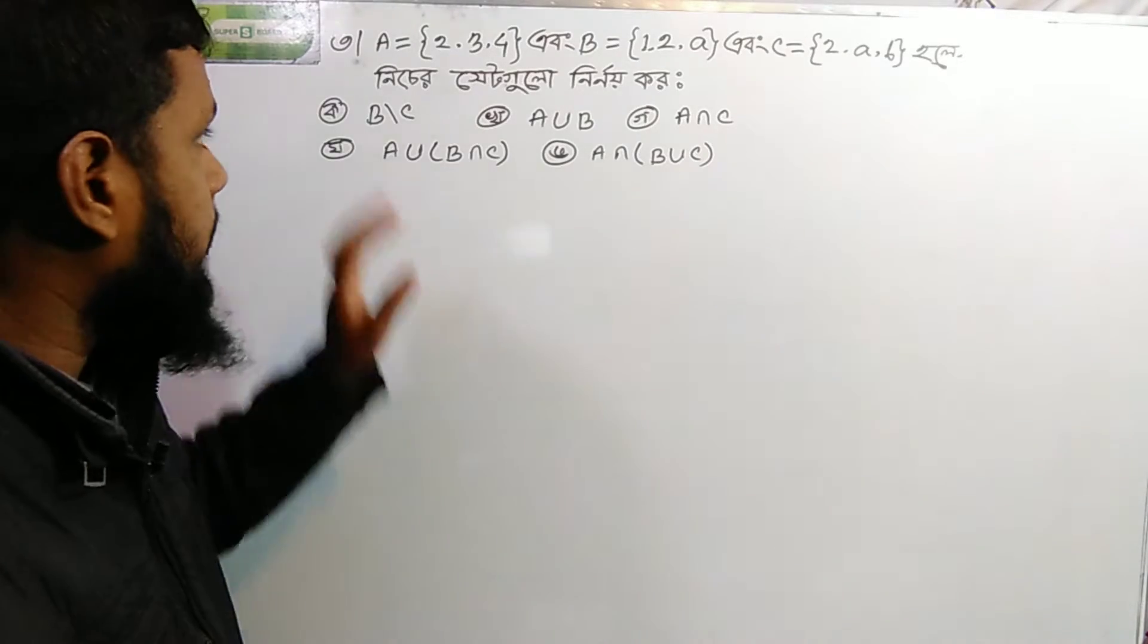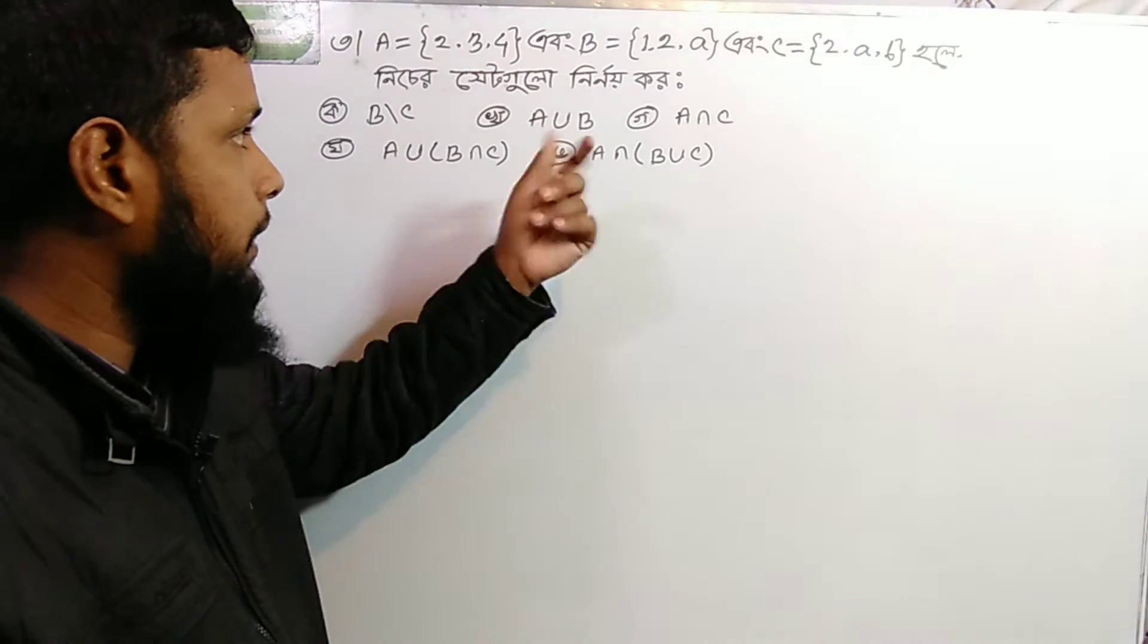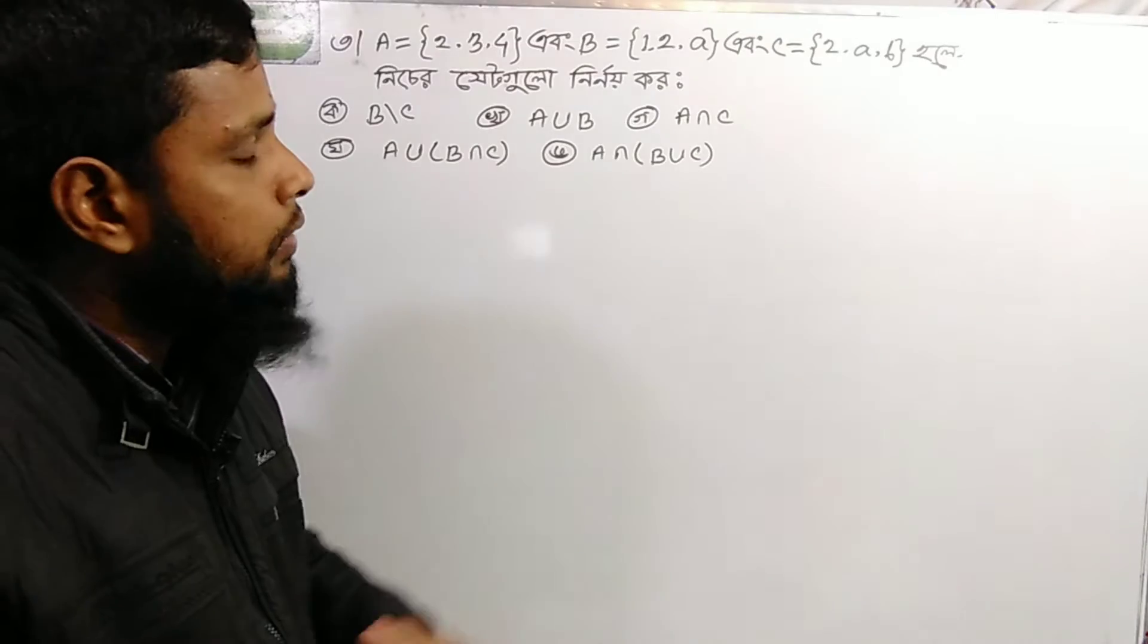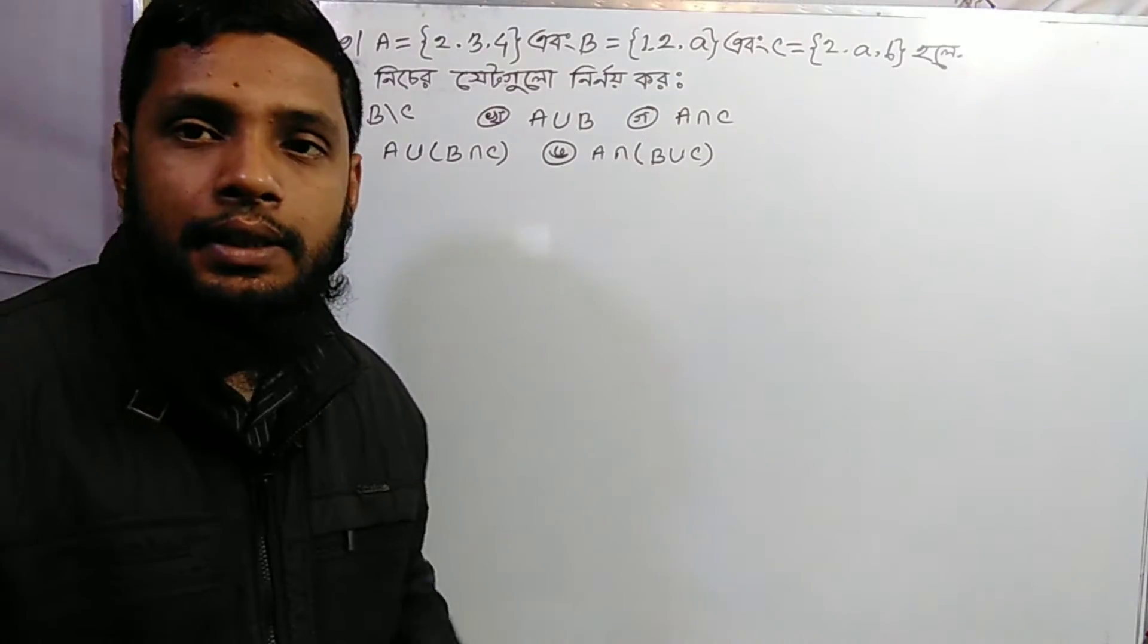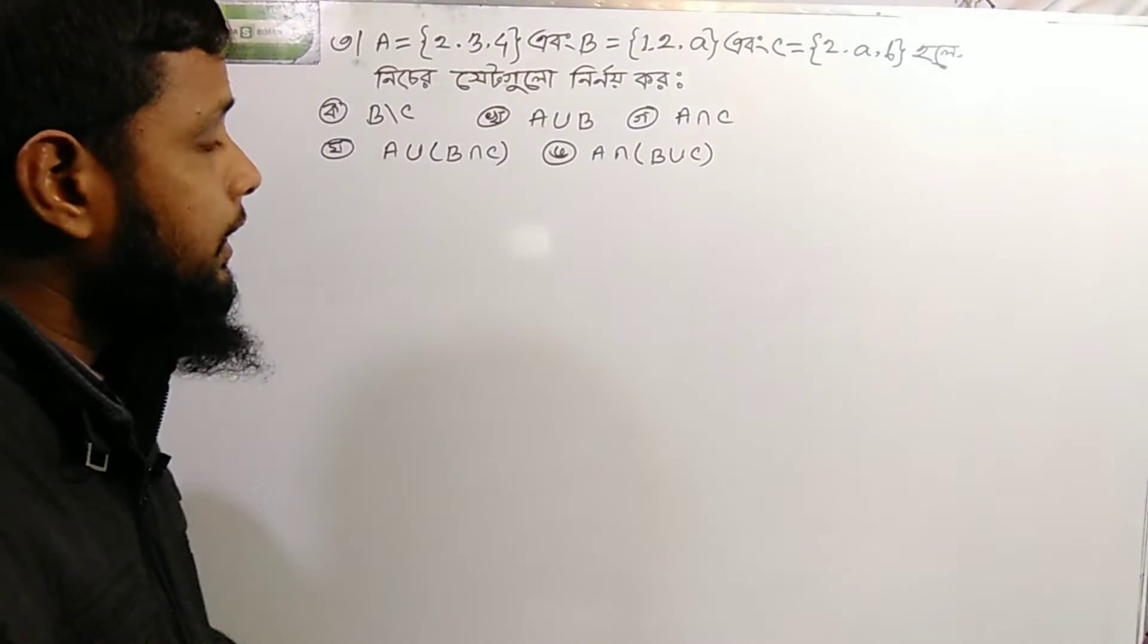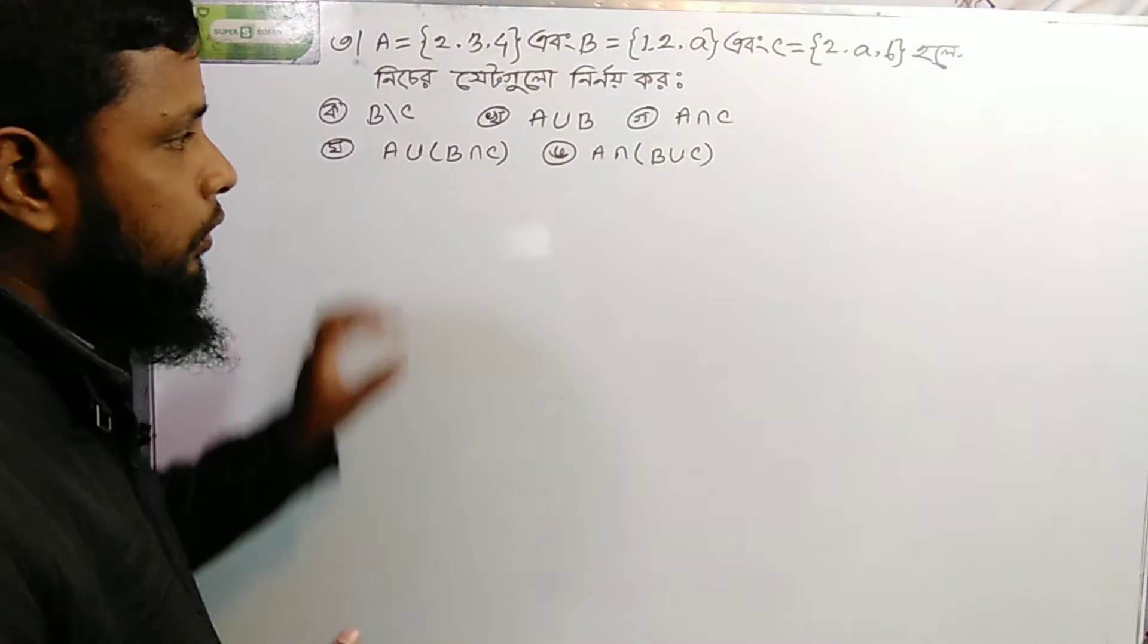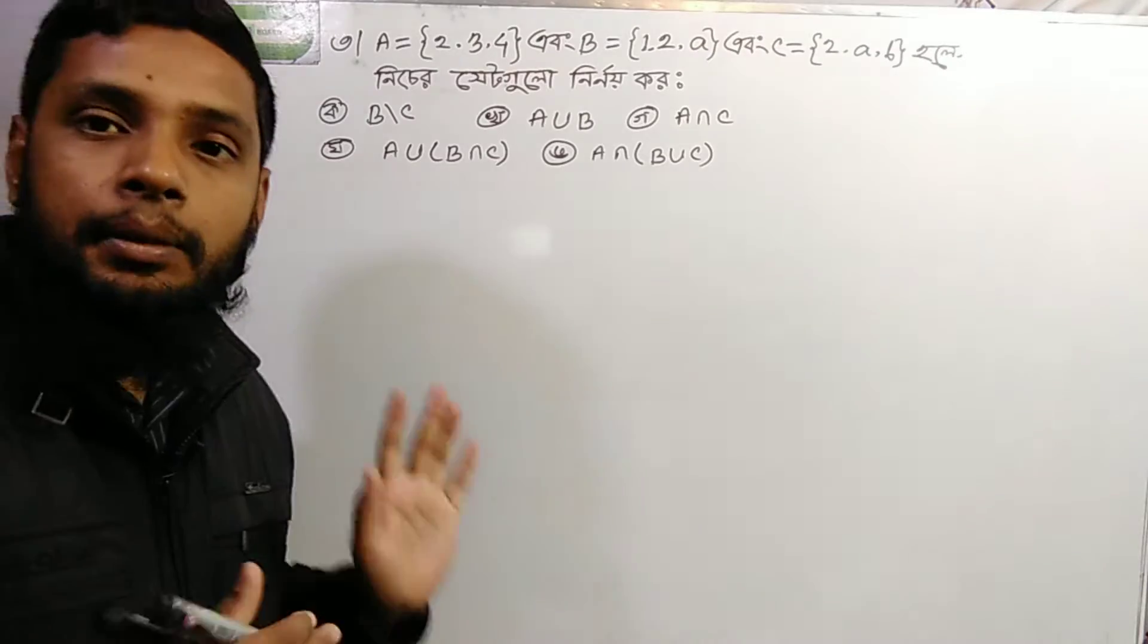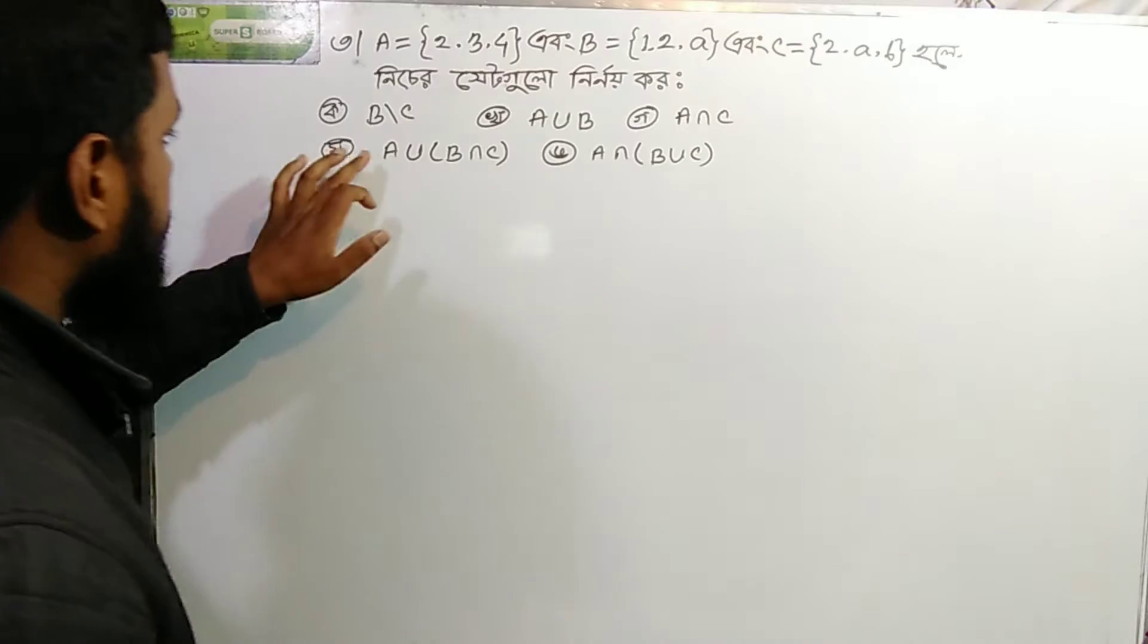Number 3 exercise: A equals {2, 3, 4}, B equals {1, 2, a}, C equals {2, a, b}.